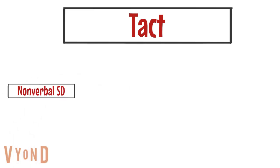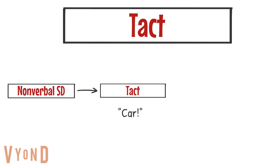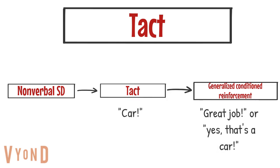The tact is a type of verbal operant in which a speaker names things and actions they have direct contact with through any of the sense modes. The tact is under the functional control of a nonverbal discriminative stimulus — something they see in the environment. The behavior is labeling something they see, such as a car or a cookie, and this produces generalized conditioned reinforcement such as praise from a listener. Essentially, the student has learned that they get reinforced for labeling things.